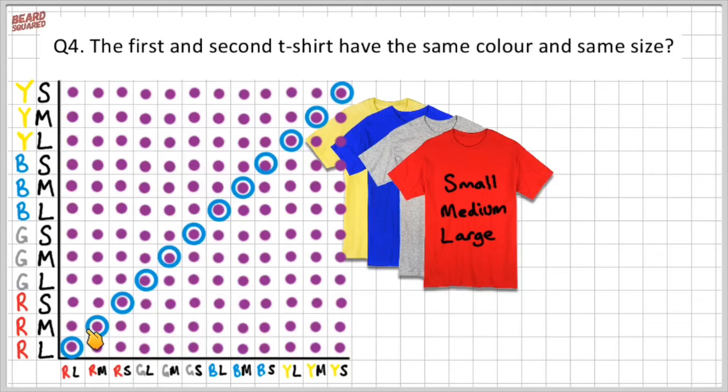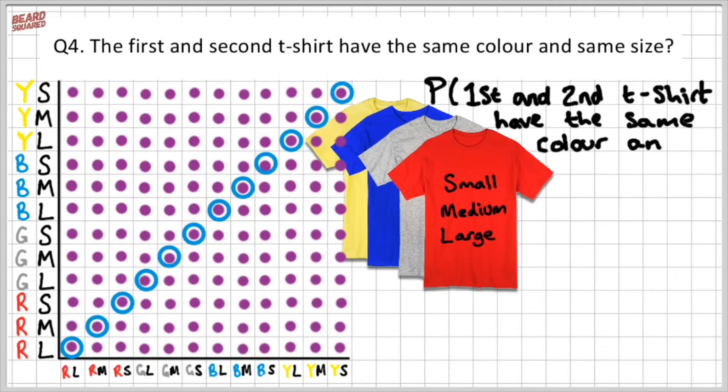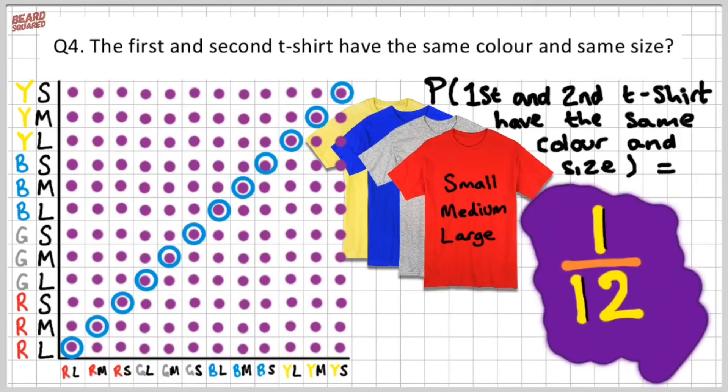Okay, so this diagonal line here represents the probability of getting the same color and the same size for both my t-shirts. So the probability that the first and the second t-shirt have the same color and the same size, and that's equal to 12 out of 144, which I can simplify to 1 over 12.